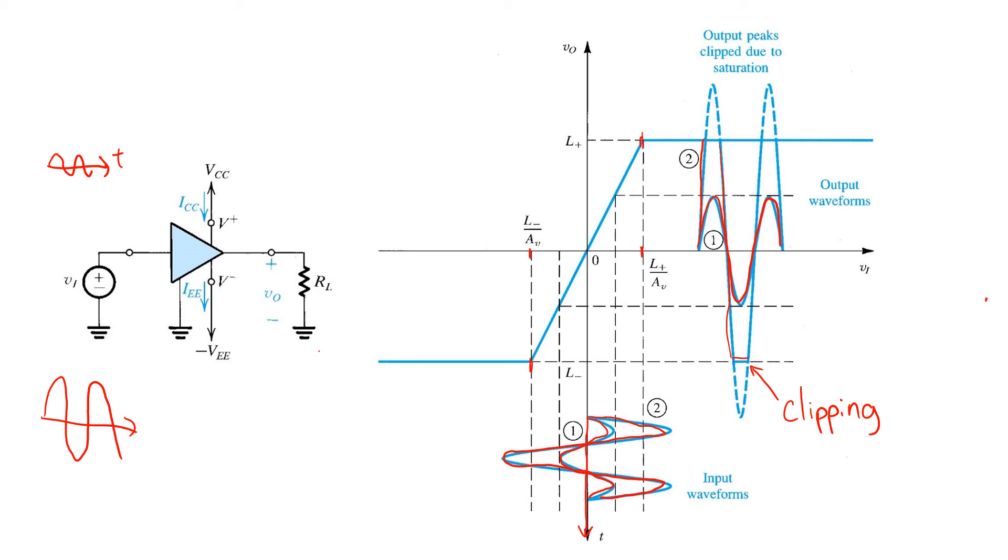Finally, it should be noted that the amplifier saturation limits, L+ and L-, are usually related to the supply voltages, in this case VCC and negative VEE.